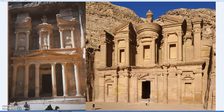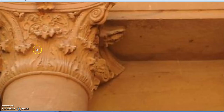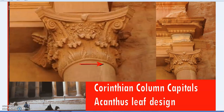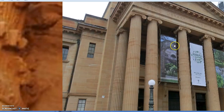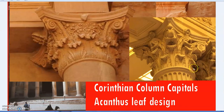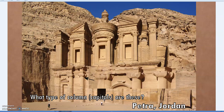The Treasury building has Corinthian column capitals. There are variations — I've done a few videos on this — but what defines the Corinthian column capital is the acanthus leaf design; that's the defining feature. They don't always have the volutes. There's classical Corinthian, composite or Roman Corinthian, but it's the acanthus leaf that identifies it. For example, the State Library of New South Wales has ionic columns on the outside, but inside you can see the acanthus leaf design — that's the defining Corinthian feature. The Treasury building in Petra is essentially Corinthian order.